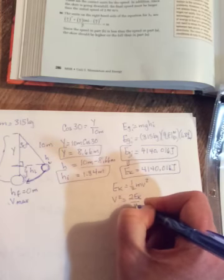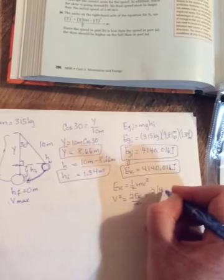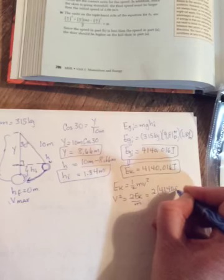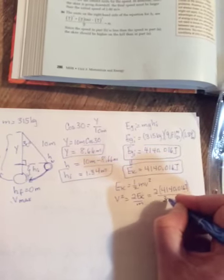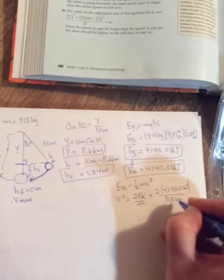So two times 4140.016 joules, divided by the 315 kilograms. And remember, that'll be v squared.